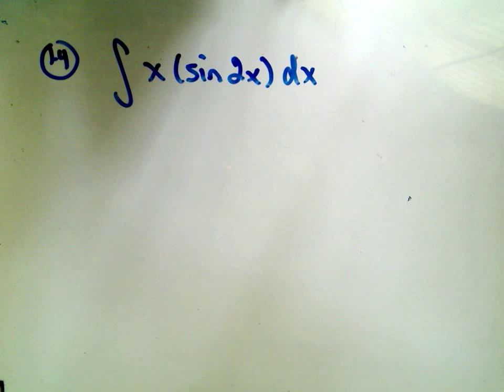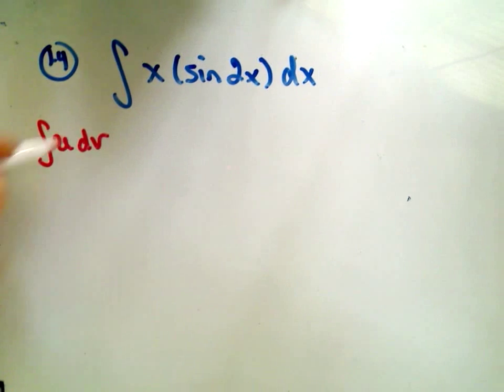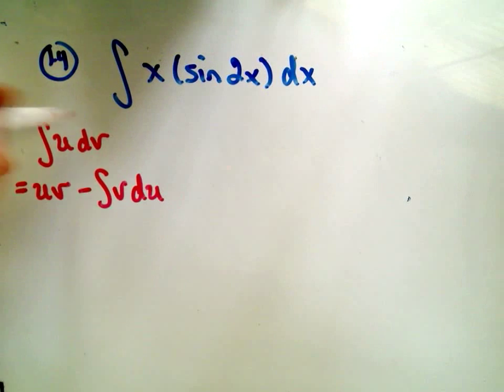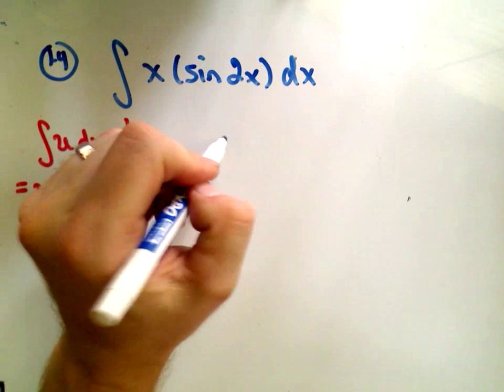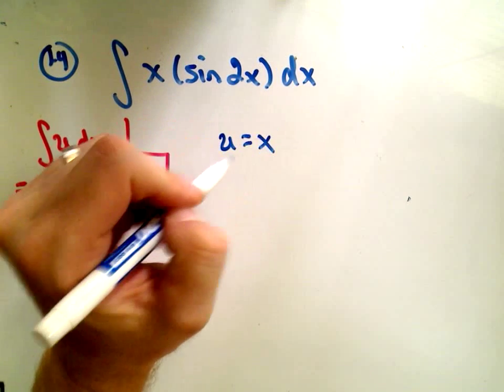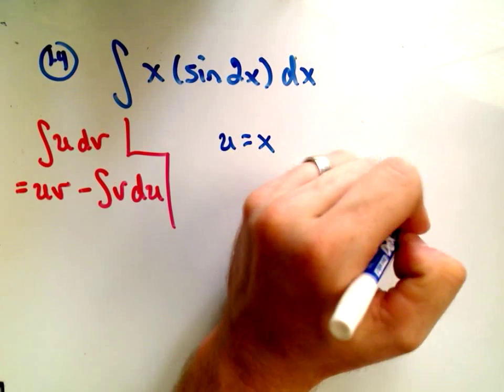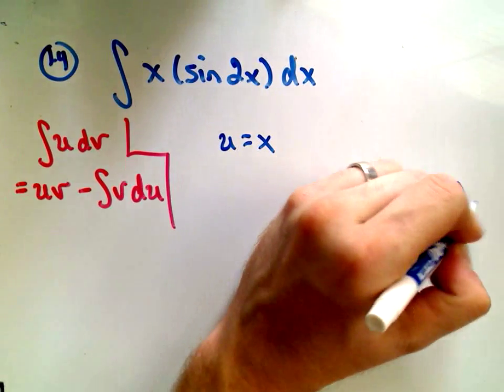Remember the integration by parts formula. It says the integral of u dv equals uv minus the integral of v du. I'm just going to use that on this problem here. I'm going to pick u to equal x, which means I'm going to pick dv to be sine of 2x dx.